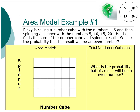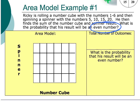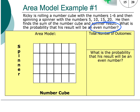In our first example, we're going to look at a situation where there's one number cube and a spinner with the numbers 5, 10, 15, and 20. Ricky is rolling a number cube with the numbers 1 through 6 and then spinning a spinner with the numbers 5, 10, 15, and 20. He finds the sum of the number cube and the spinner results. What is the probability that his results will be an even number?